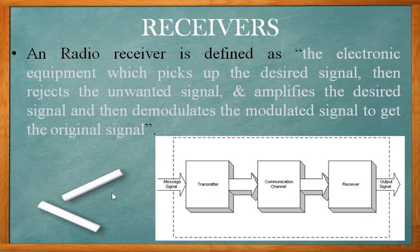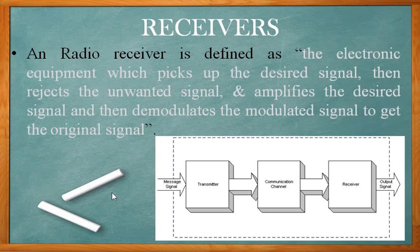The receiver is an electronic equipment which picks up the desired signal and rejects unwanted signals. Receivers can also pick up adjacent frequencies from other message signal spectrums, so proper filters should be kept at the receiver to select the desired frequency. After rejecting unwanted signals, the receiver amplifies the weak signal, then demodulates it, and passes it to power amplifiers to boost up the original message signal.